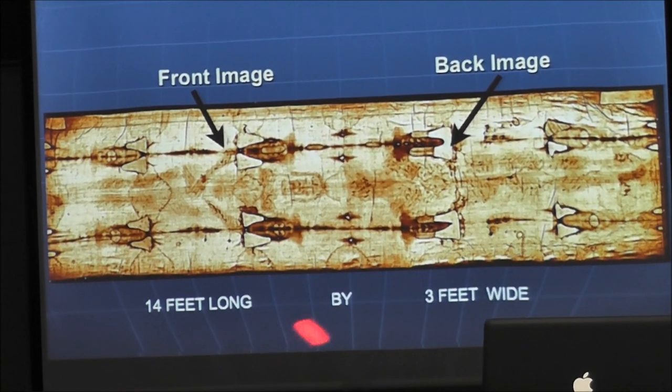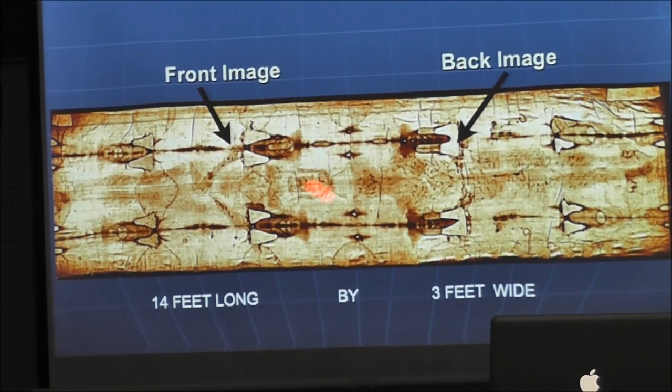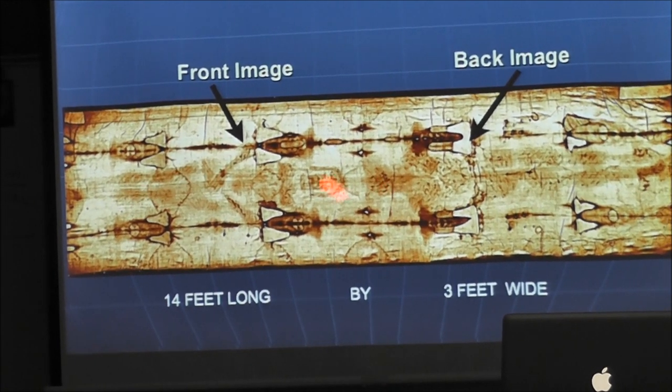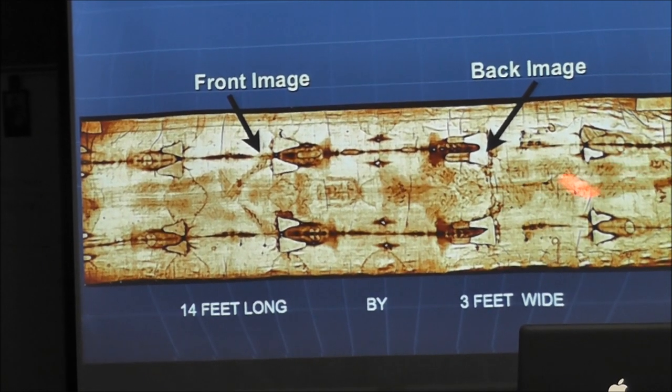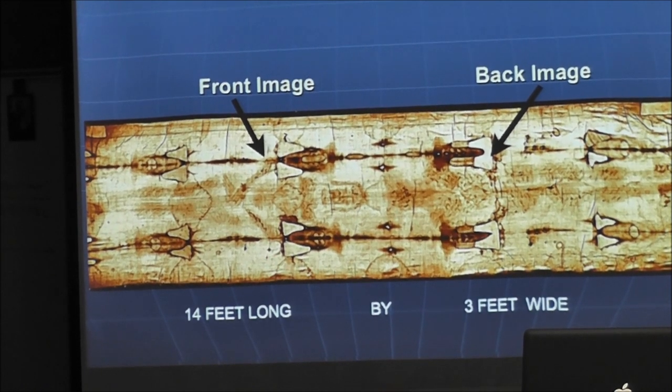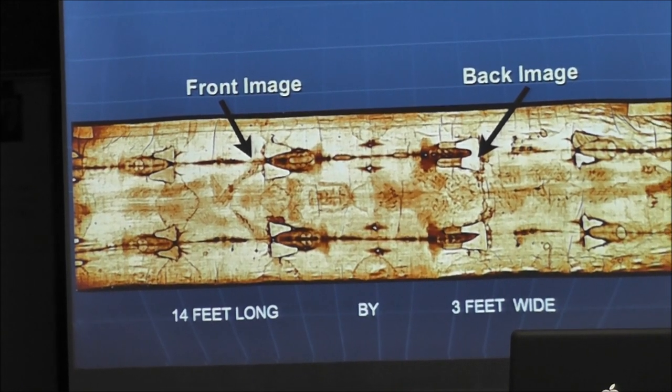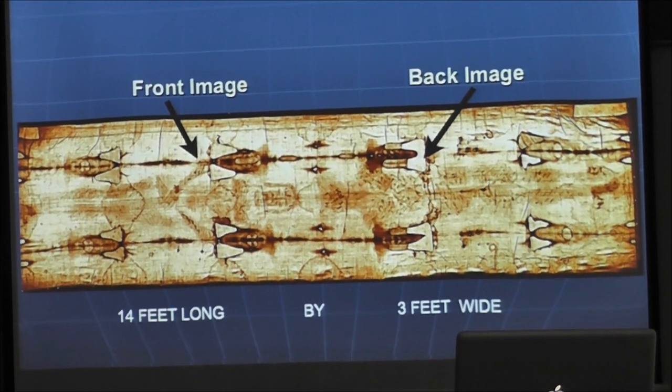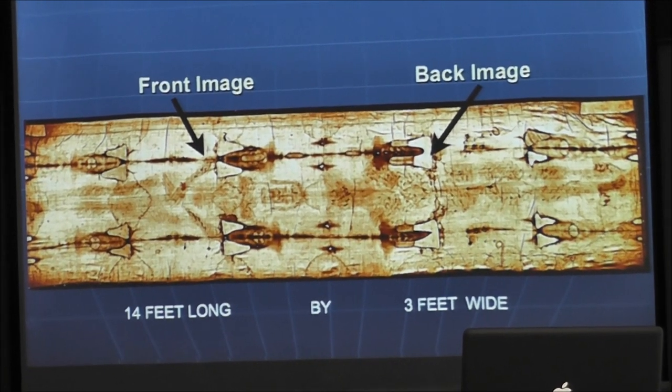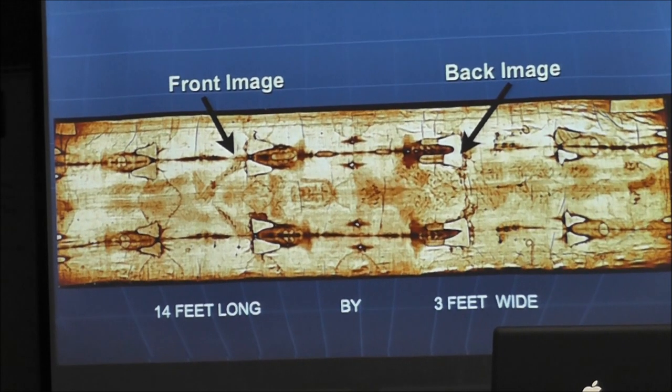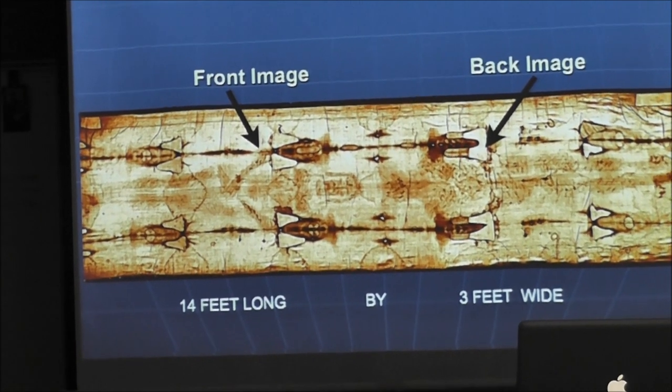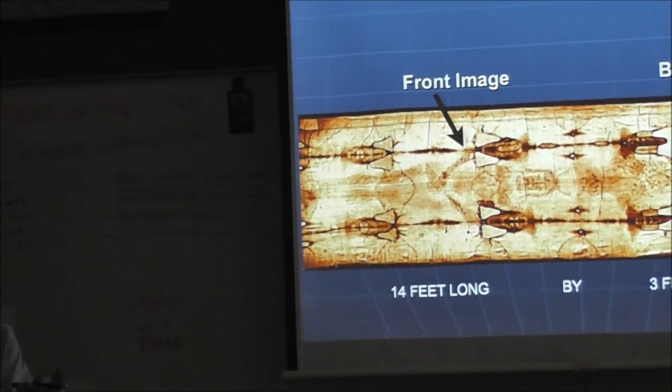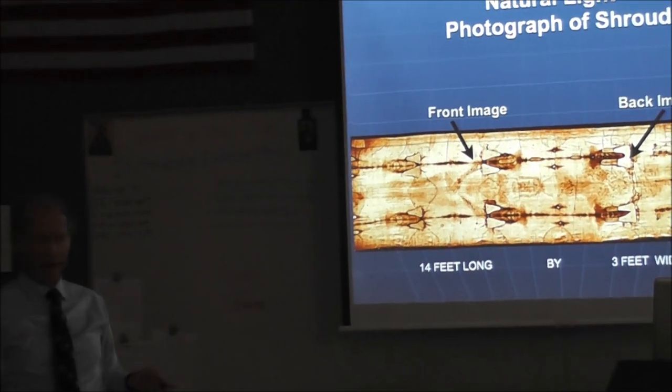All right. So it's 14 feet long, three feet wide. This is at face, chest, arms, knees, back of head, back, legs. Okay? And it is as if a cloth is lying down on rocks, a body was placed on it, and then the second half of the cloth was pulled over it. Okay? So when the image was created, it has a front, back image. Okay? You all got that?